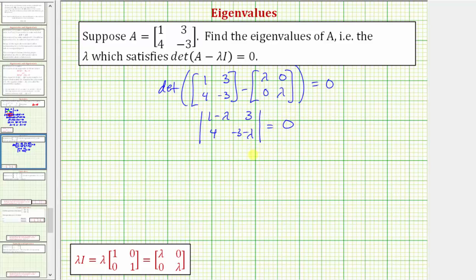The value of the two-by-two determinant is equal to this product minus this product. So we have the quantity one minus lambda times the quantity negative three minus lambda, minus three times four, and this must equal zero.